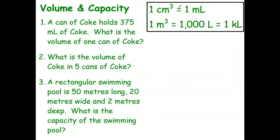First one's dead easy. A can of Coke holds 375 milliliters of Coke. What is the volume of one can of Coke? We're not worried about the volume of the actual metal itself, just the volume inside. 375 milliliters is going to be 375 cubic centimeters. So the answer to question one - there's no calculations to do. The number is exactly the same, and all we have to do is change the units.